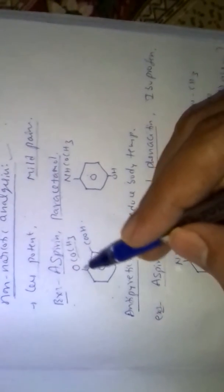Non-narcotic analgesics are less potent and are used for mild pains like muscular pain and headaches. They do not produce sleep and do not cause depression of the central nervous system. Examples include aspirin (acetyl salicylic acid) and paracetamol (parahydroxy acetanilide).